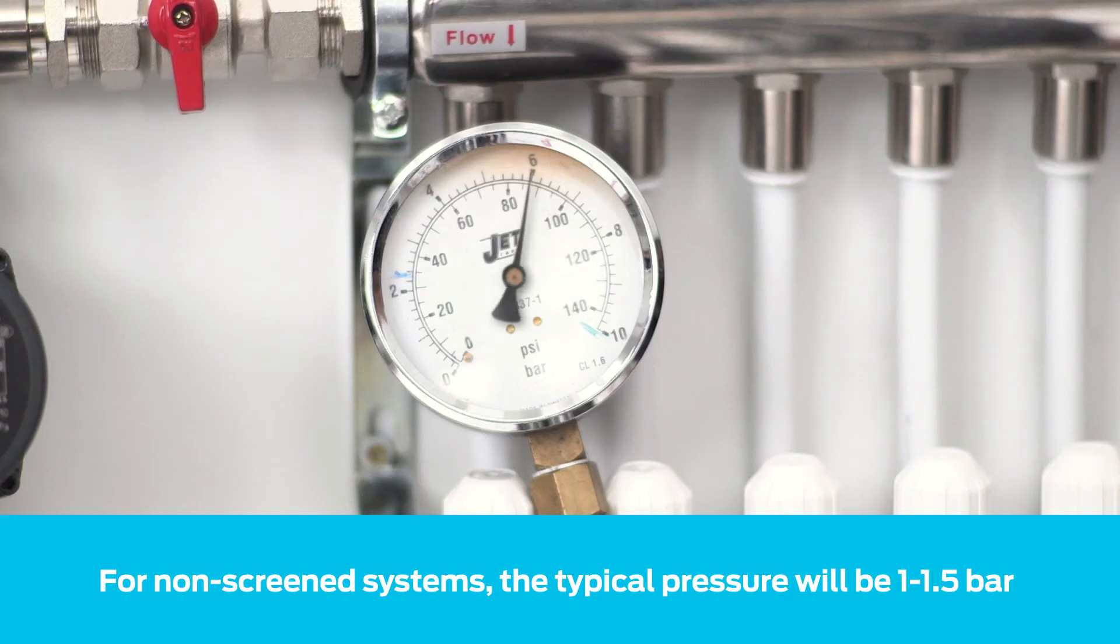Screeded floors should be left to approximately 6 bar until the screed has been laid and dried to protect pipework from damage.